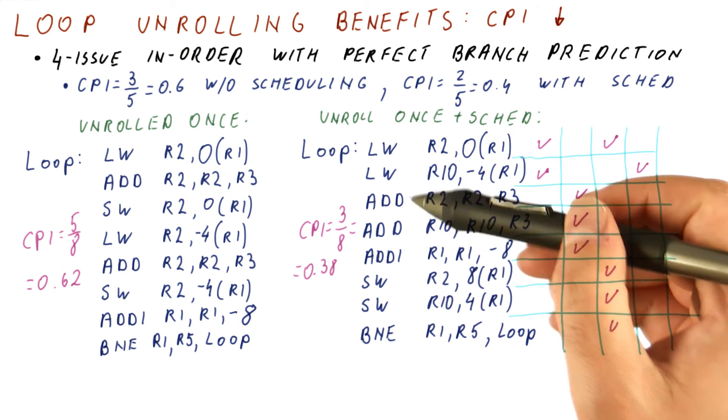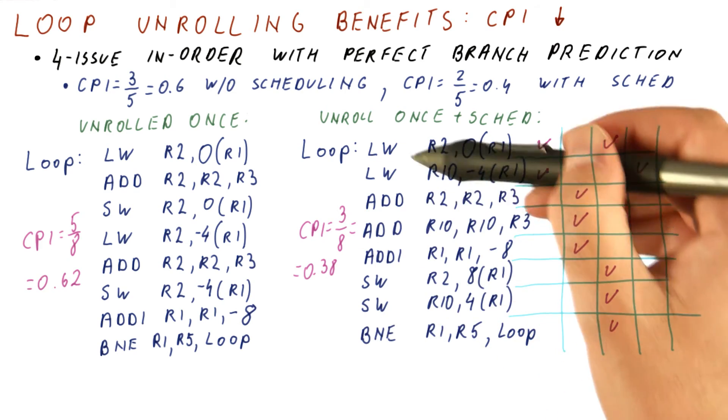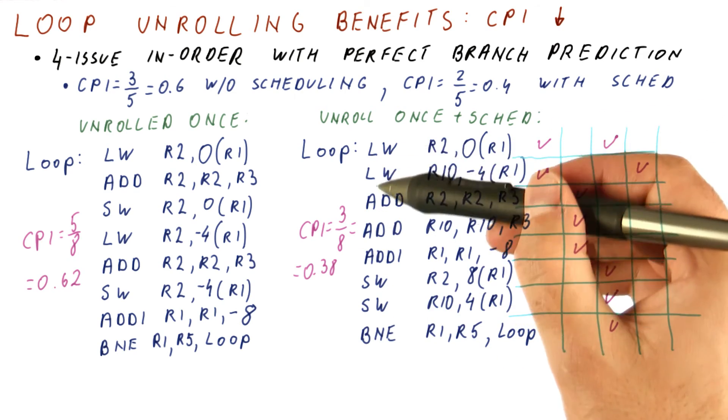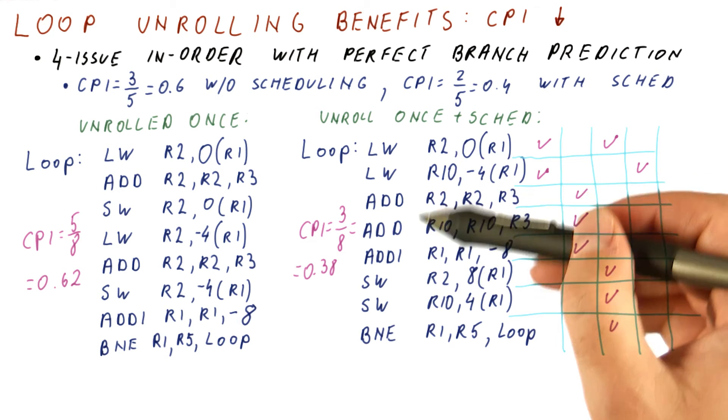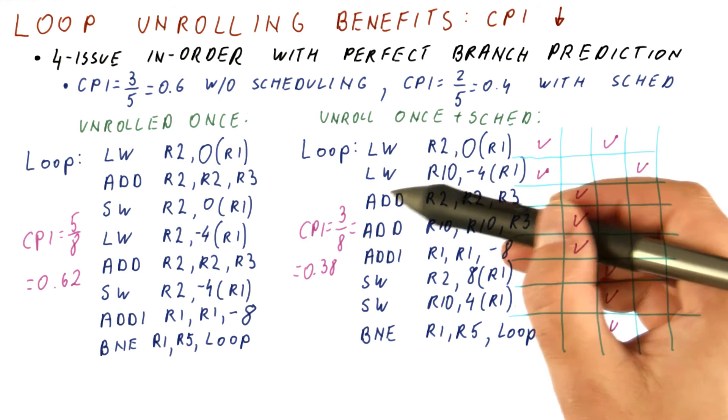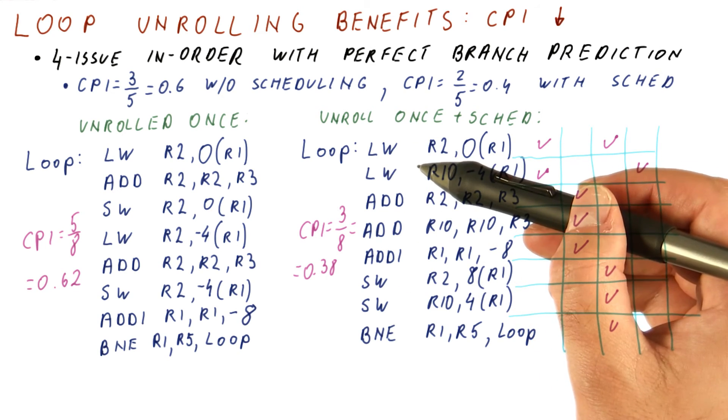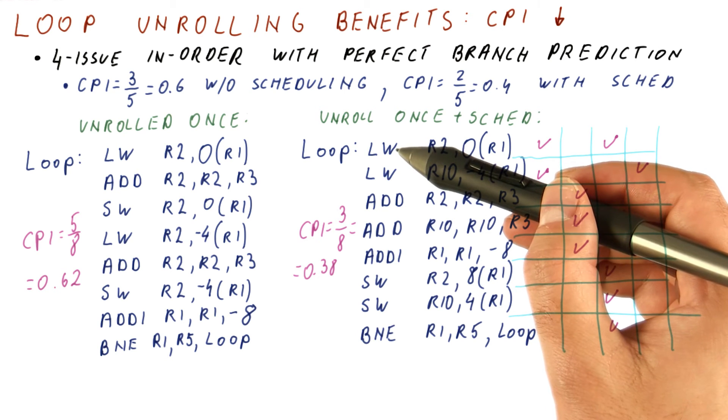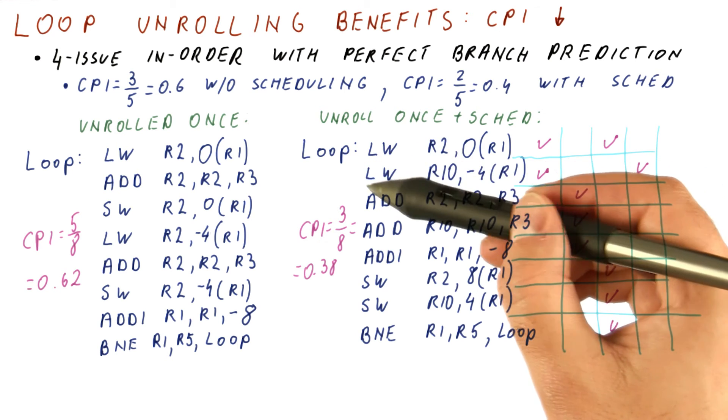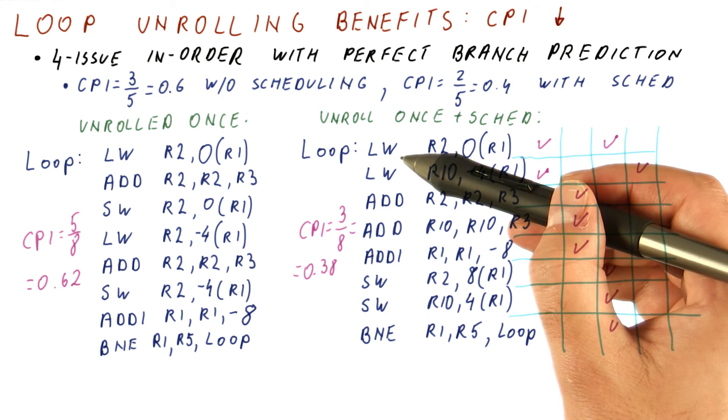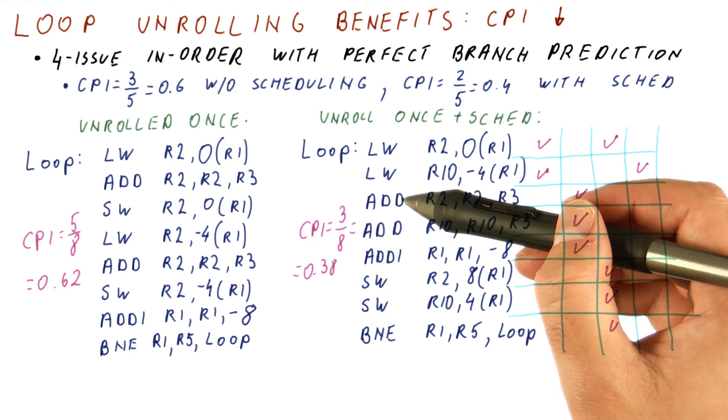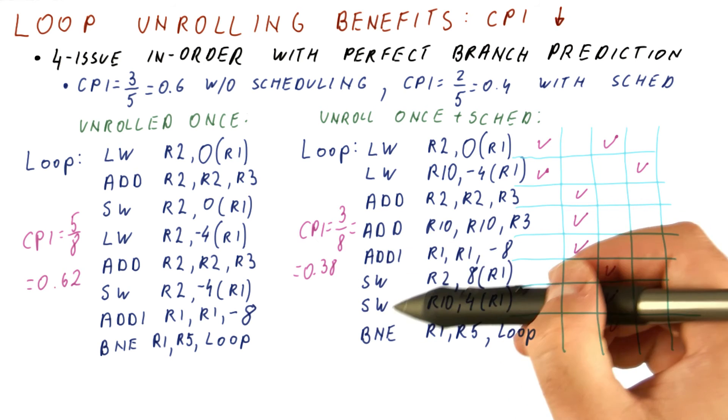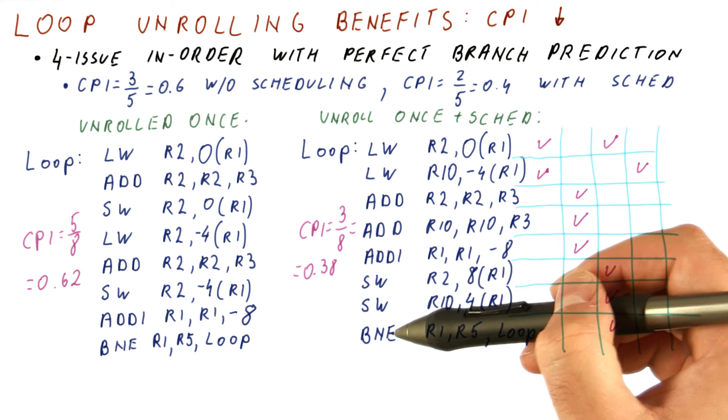So what really happened is unrolling gives us more stuff that we can reorder here, so that we can find more things that don't have dependencies. And thus, for example, we were able to do these two loads that were not available prior to unrolling. If we unroll this loop three times, then we would have four loads here that can all proceed in the same cycle. We will have four adds here that can proceed in the same cycle, four stores that can proceed in the same cycle, and then the add and branch.